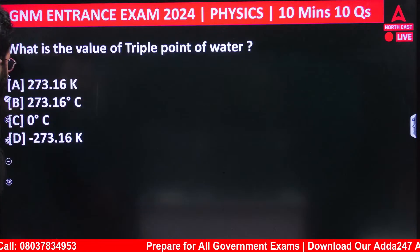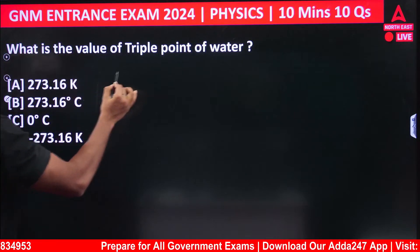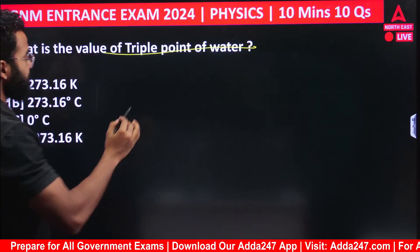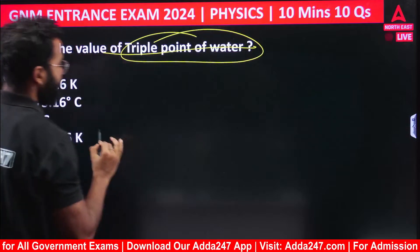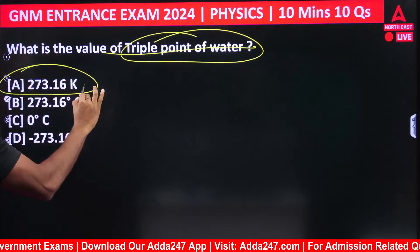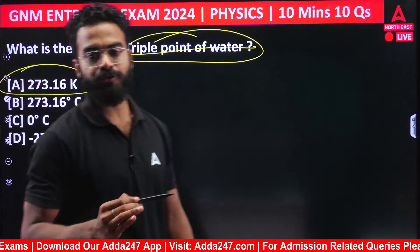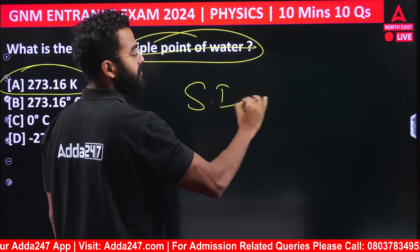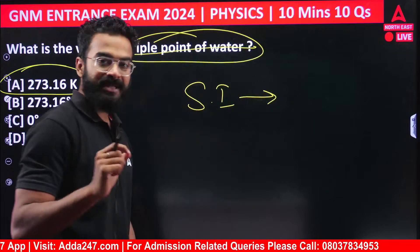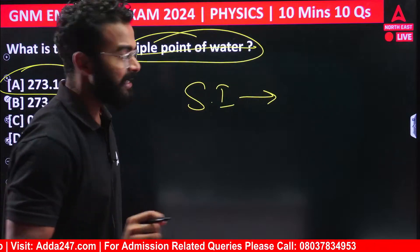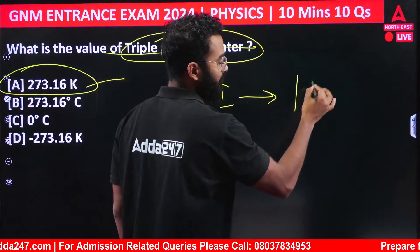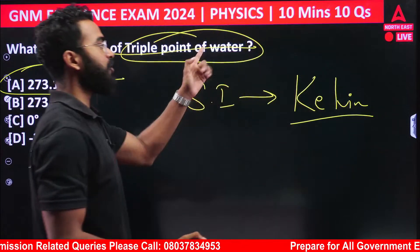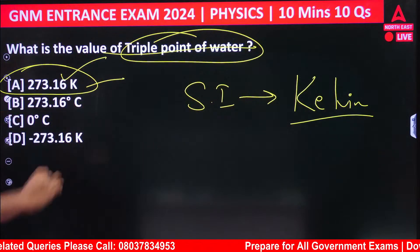Next question: what is the value of the triple point of water? The correct answer is option A — 273.16 Kelvin. The SI unit of temperature is Kelvin, so the triple point of water is 273.16 Kelvin.